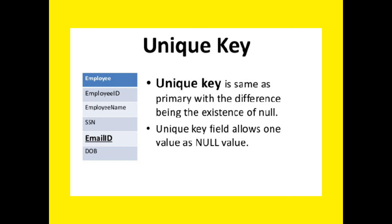The unique key is the same as the primary key, with the difference being the existence of null — a unique key field allows one null value. So the only difference is that the primary key does not allow null values, but the unique key allows one null value. In the employee table, employee ID can become the unique key.